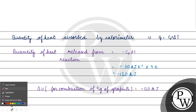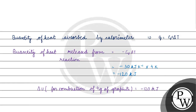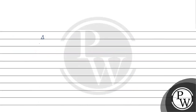This was for just 4 grams of graphite. If we want the value for 1 mole of graphite, we multiply: 12 gram per mole × (minus 120 kilojoule / 4 gram), giving delta U = minus 360 kilojoule per mole. Now, to find delta H, we use: delta H = delta U + delta Ng × R × T.